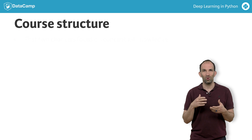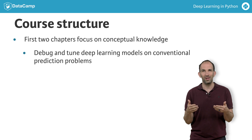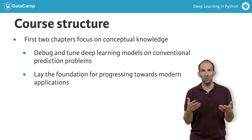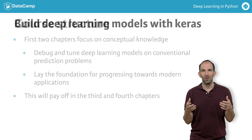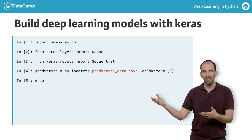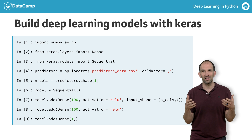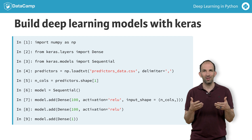The first two chapters of this course focus on conceptual knowledge about deep learning. This part will be hard, but it will prepare you to debug and tune deep learning models on conventional prediction problems, and it will lay the foundation for progressing towards those new and exciting applications. You'll see this payoff in the third and fourth chapters. You'll write code that looks like this to build and tune deep learning models using Keras to solve many of the same modeling problems you might have previously solved with Scikit-learn.